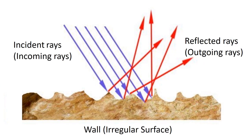Let us look at the diagrammatic representation of irregular reflection. First, let's observe the irregular surface — the top of the surface is not smooth or polished; let us assume it to be a wall. The incident rays, drawn in blue, point towards the surface. After striking the surface, these rays are reflected in different directions. They all point away from the surface but are not parallel to each other as the incident rays were.